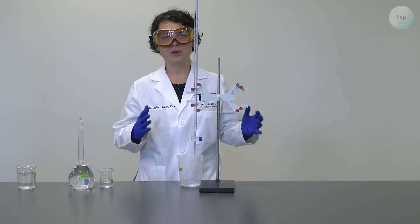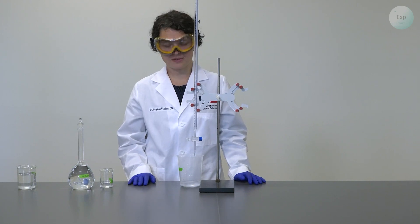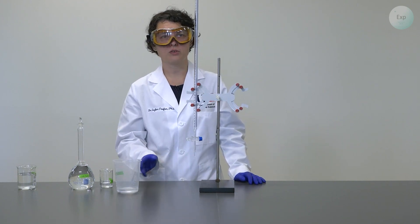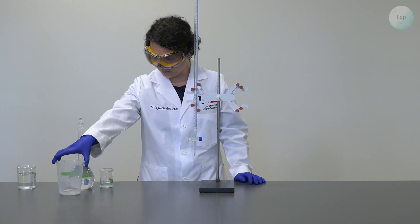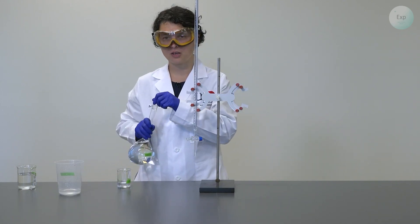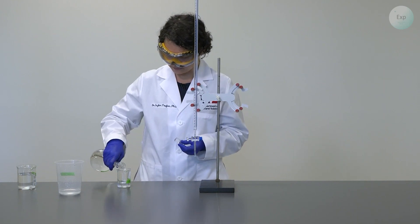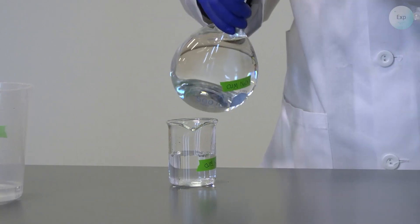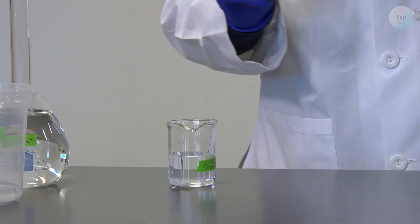Once you're done with the rinsing three times, then you're ready to fill your burette with your charging solution. And at that point, you want to make sure that you have a little over 50 milliliters of your charging solution. And once again, you don't adjust yourself to the burette. You adjust the burette to yourself.